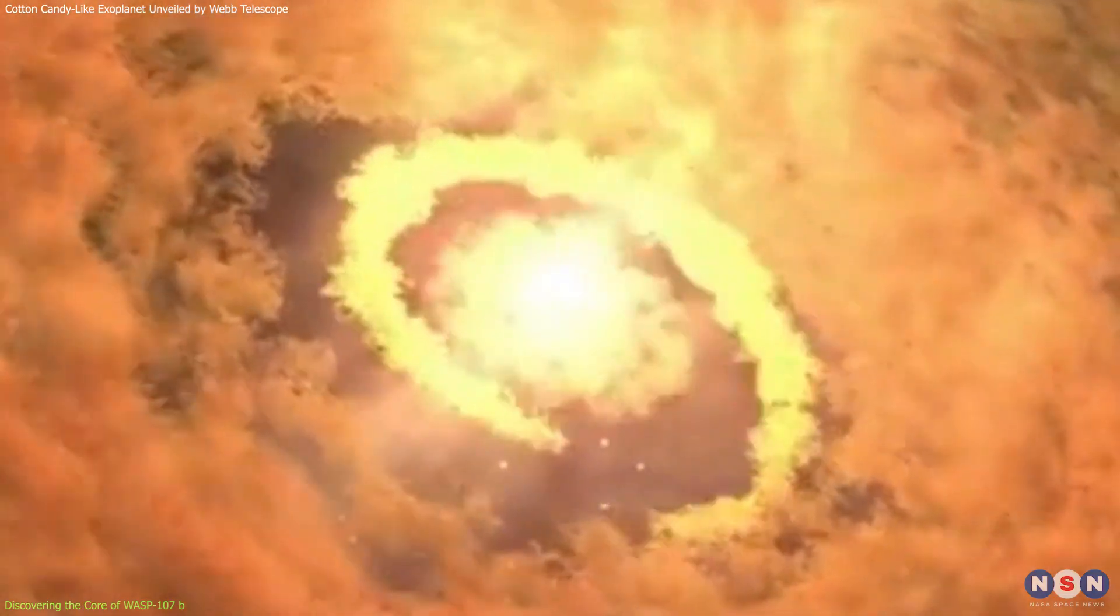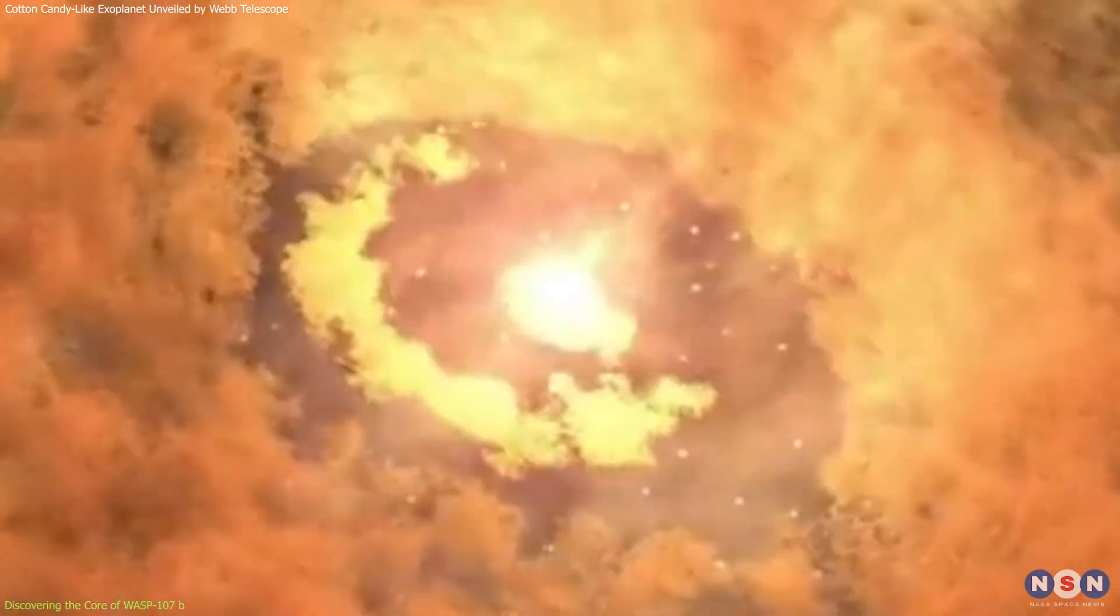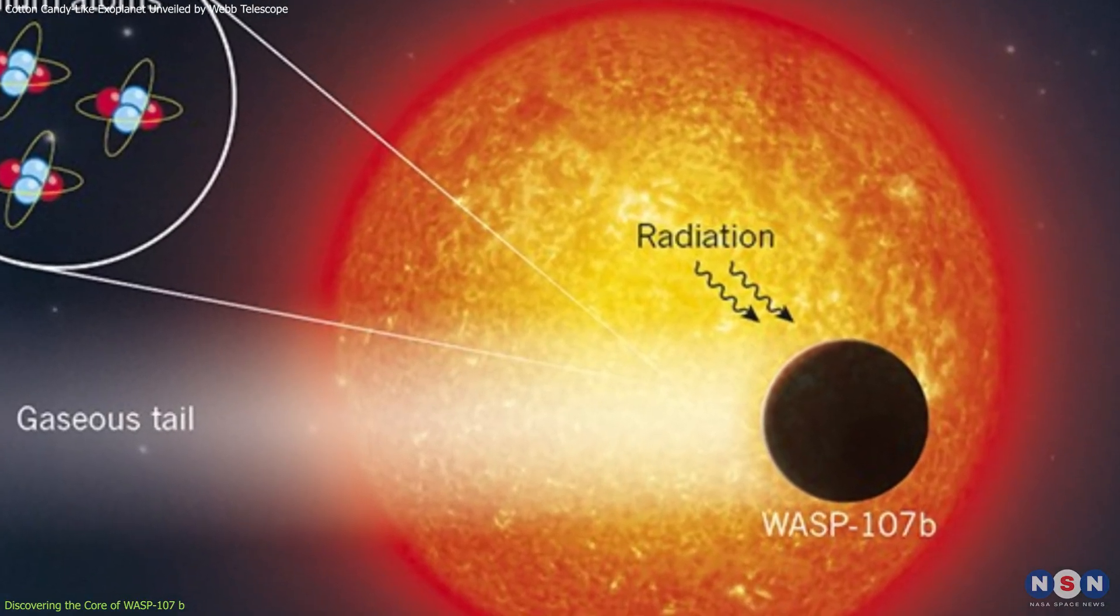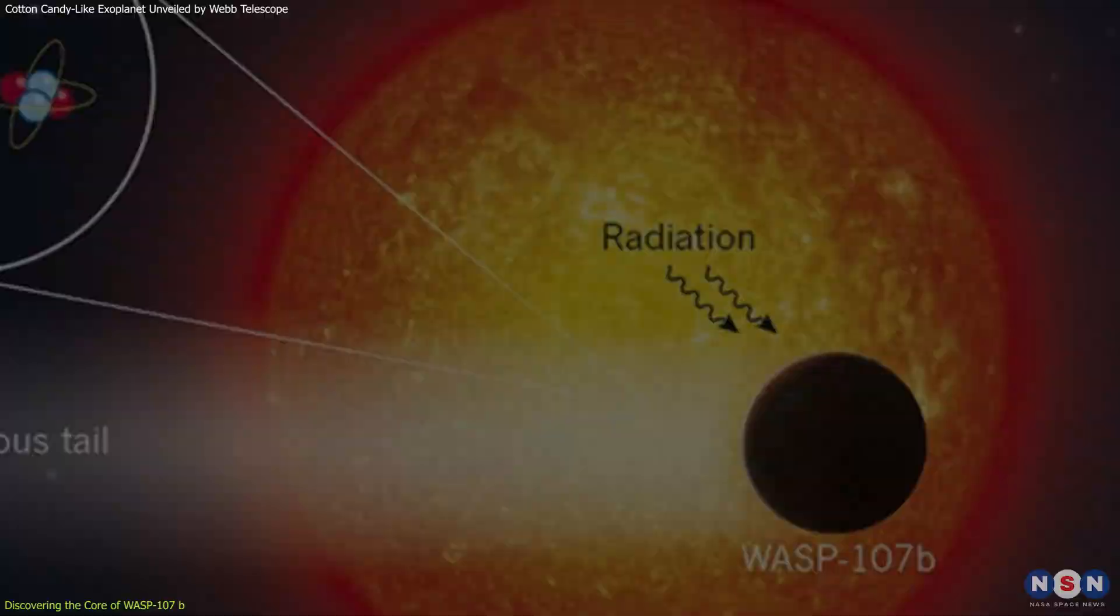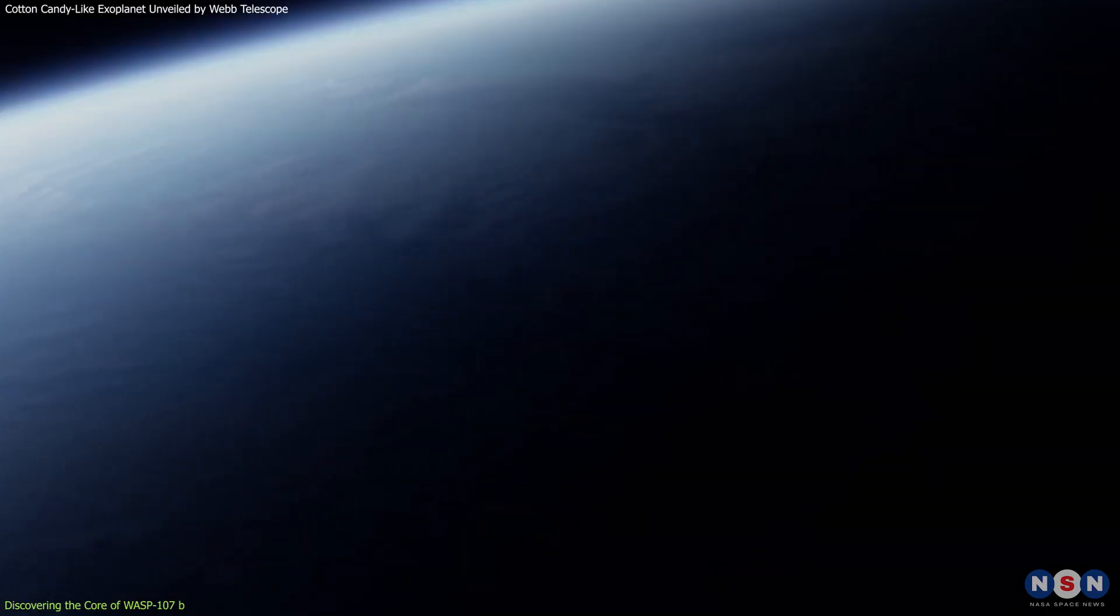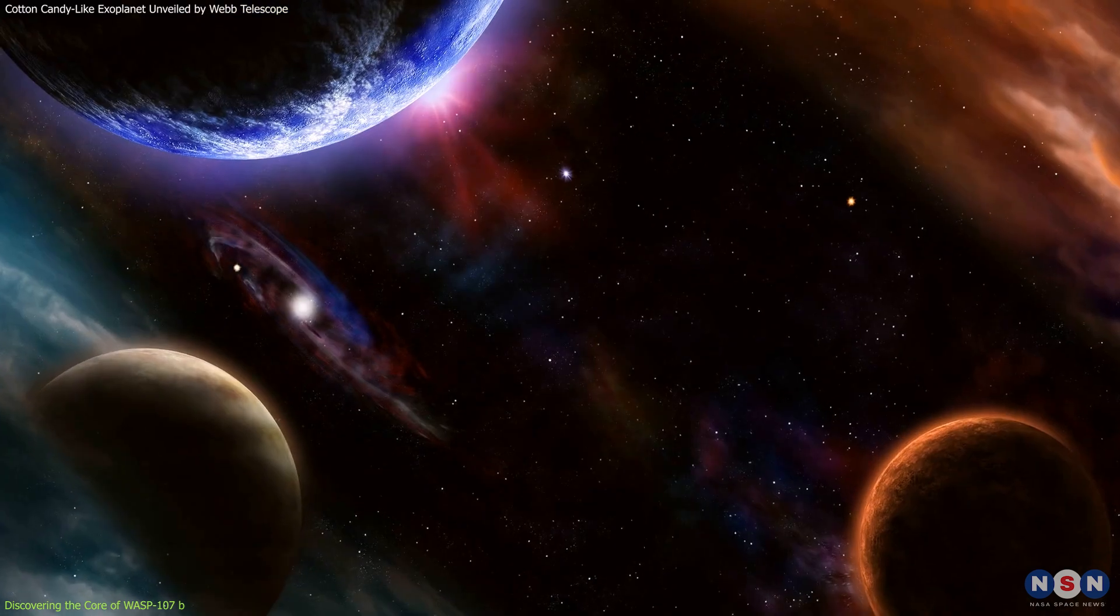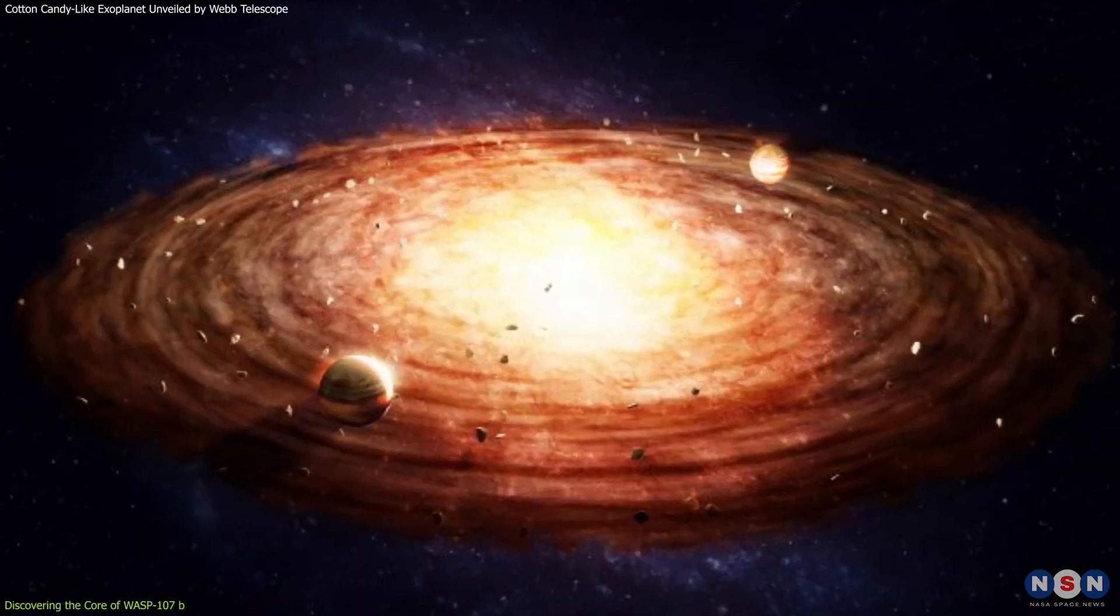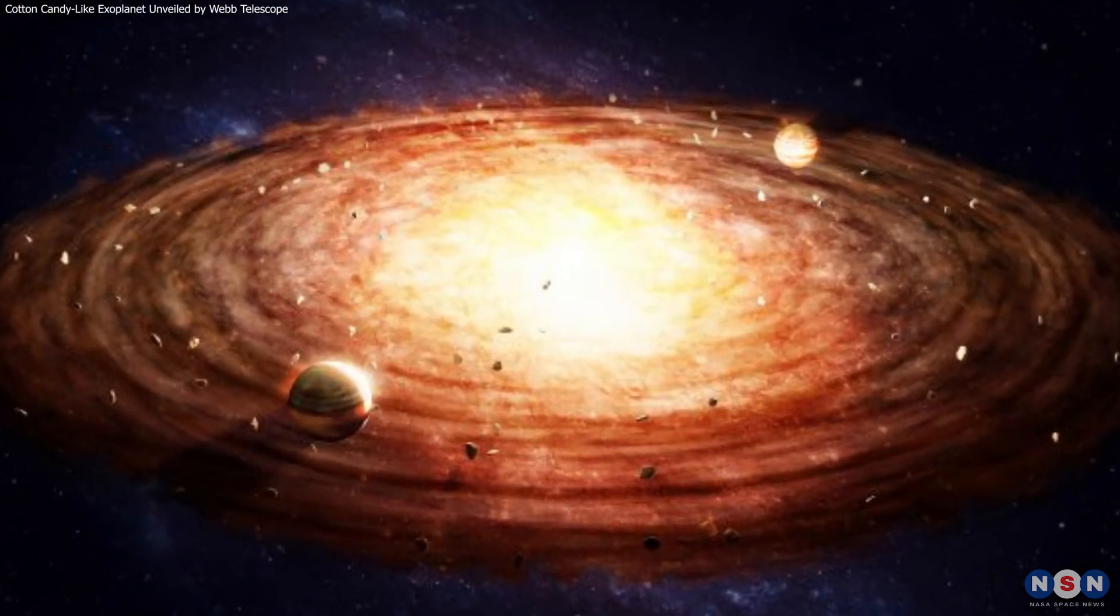Instead, it appears that this planet began with a significant accretion of heavy elements, quickly followed by the collection of lighter gases like hydrogen and helium. This challenges the conventional view and points to a more dynamic and varied process in the formation of gas giants. By measuring the core masses of other exoplanets, scientists can explore the diverse processes behind planetary formation.